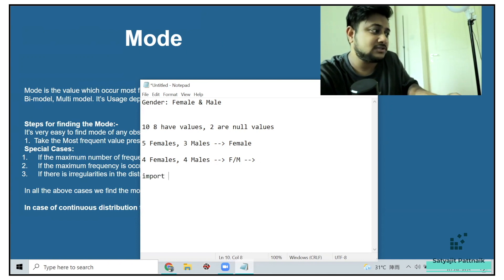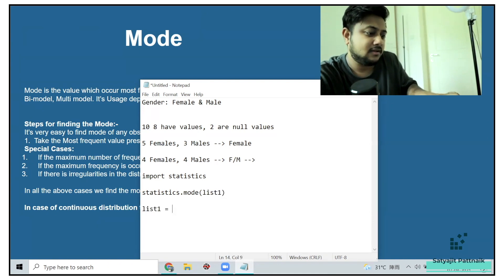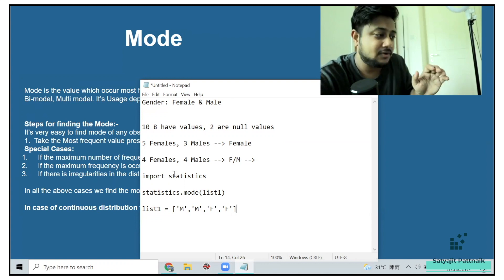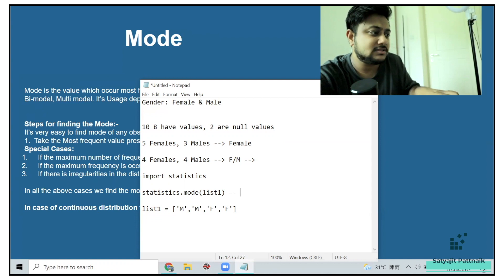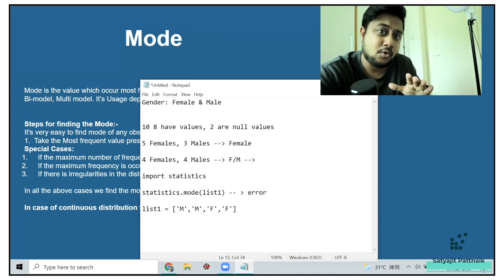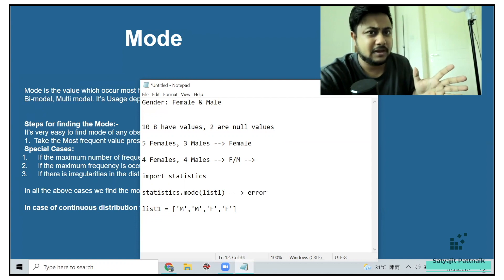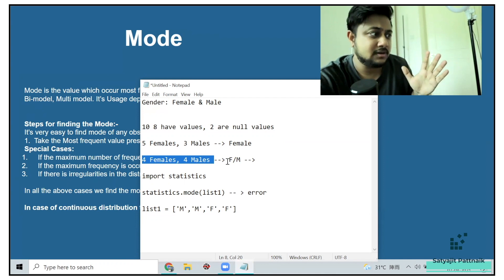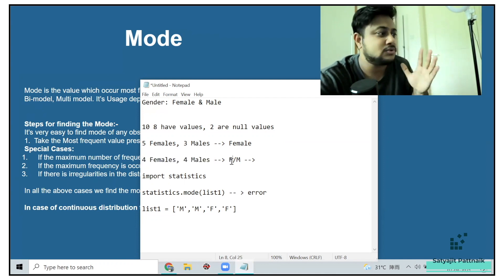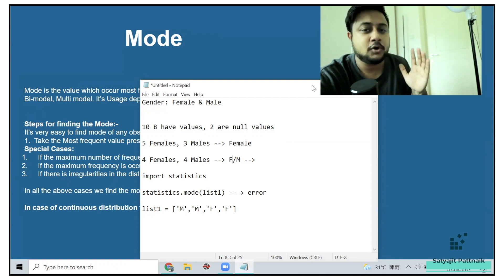In Python, if you are using import statistics, and then if you call statistics.mode of let's say list one, and let's say your list one is basically male, male, female, female. That means I have like two values from each value. Now, if you do this, it will throw me an error. No mode found. So it depends upon library to library. But conceptually, in this case, if you have equal amount of distribution, the main motive is you can use either of the values if you want to impute the null values.